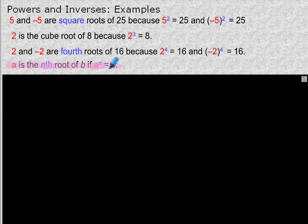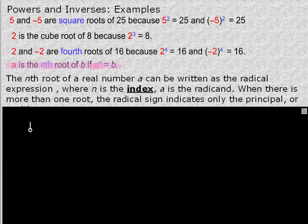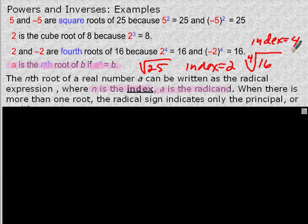The nth root of a real number can be written as a radical expression where n is the index and a is the radicand. We're used to seeing the square root like the square root of 25 — this is a radical expression where your index is equal to 2 and your radicand is 25. You could also write the cube root or the fourth root. For example, the fourth root of 16, where your index is equal to 4 and your radicand is equal to 16.